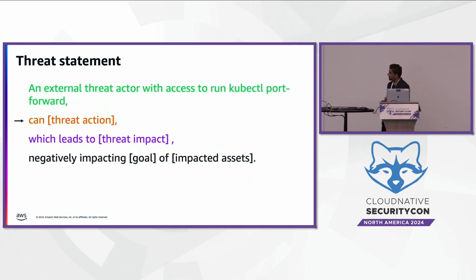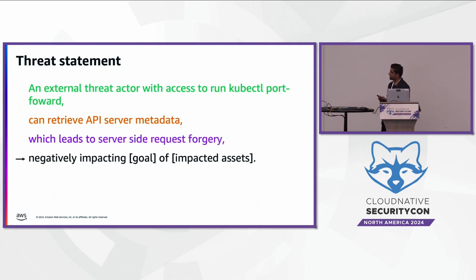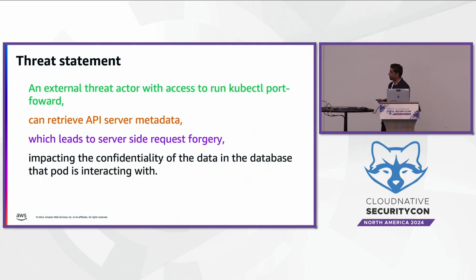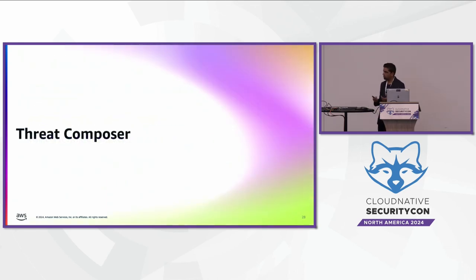Within Kubernetes, for example, an external threat actor can get access to kubectl port-forward, which can give them the ability to retrieve API server metadata. With that, they can utilize that information to perform server-side request forgery. The negative impact is that you're essentially impacting the confidentiality of your data — going back to the CIA triad, it directly affects data confidentiality.